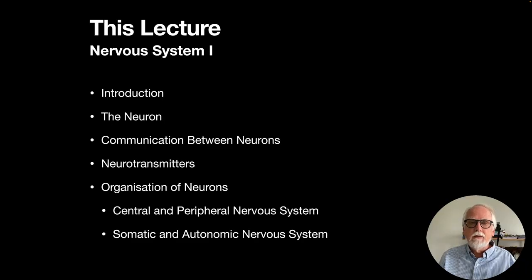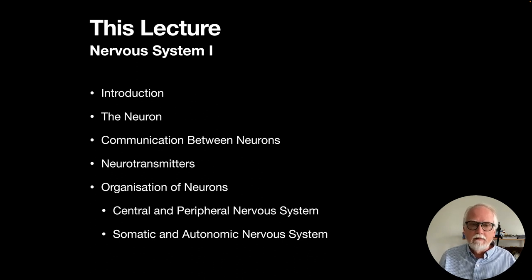In this lecture, I'm going to introduce the nervous system and then talk about the neuron as its basis. We'll cover communication between neurons, neurotransmitters, and the organization of neurons, including the difference between the central and peripheral nervous systems. In the peripheral nervous system, we'll drill down to look at the somatic and autonomic nervous systems. In the next lecture, we'll focus more on the brain and spinal cord and what's relevant to social behavior.